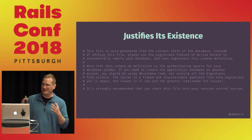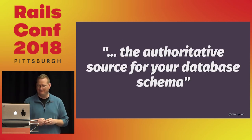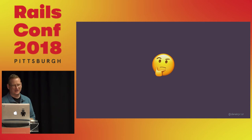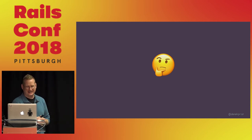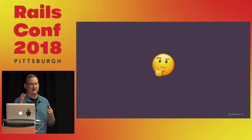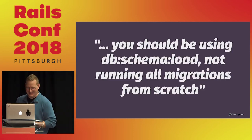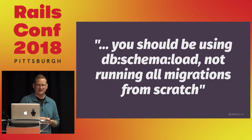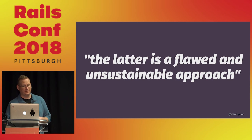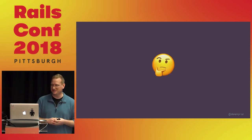The schema file attempts to justify its existence with a large comment block at the top that claims it's the authoritative source for your database schema. That strikes me as aspirational at best — the database is actually what's authoritative. If you've ever written execute inside a migration and done any sort of DDL statement manually, there's a good chance this schema file is not actually authoritative. It also says that if you want to recreate a new instance of this database you should use db:schema:load, not running all migrations from scratch — because running those migrations from scratch is a flawed and unsustainable approach: the more migrations you amass, the slower it'll run and the greater likelihood for issues.